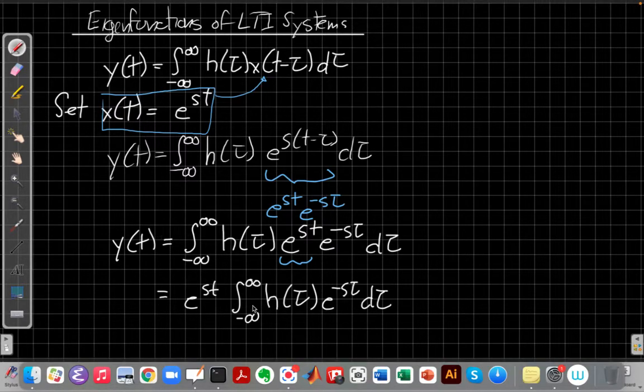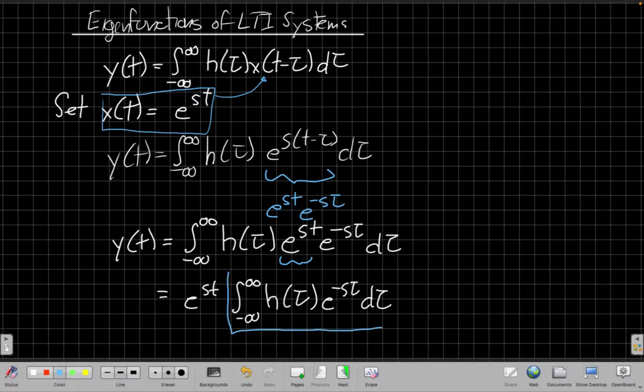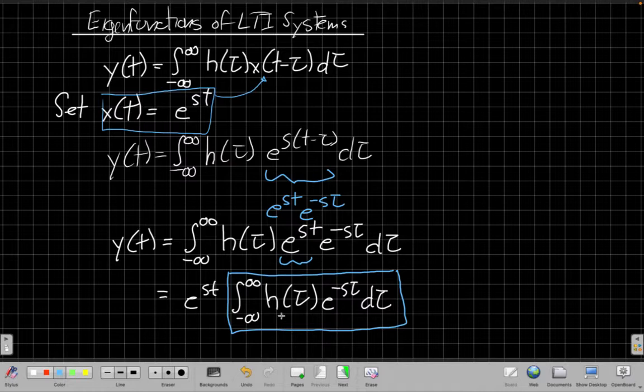And when I do that and look at it this way I can say, well now my output is the same e to the st I put in times this other thing over here that doesn't depend on t. This integral now, I sort of put a box around it. This is just a constant. Well, it's a constant in the sense it's not changing with time with t. It is a function of s though. So this whole box is a function h of s. We call this the system function.